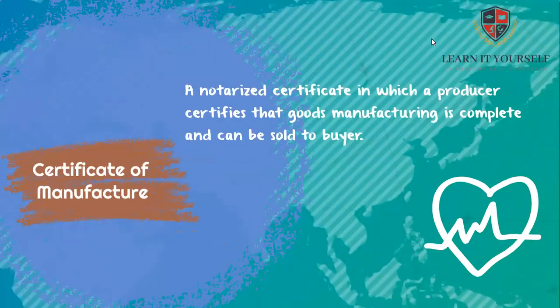Now, the certificate of manufacture is a statement — often not frequently raised — in which a producer of goods certifies that manufacture has been completed and that the goods are now at the disposal of the buyer.